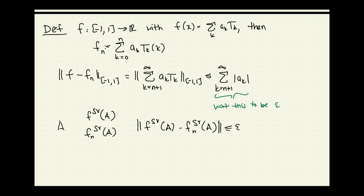For example, there are Jackson theorems which say that if I am singly differentiable — if my first derivative is bounded — then the A_k's decay as 1/k². If doubly differentiable, they decay as 1/k³. The nice thing is that you don't really need to try to explicitly compute these coefficients, which can be difficult.